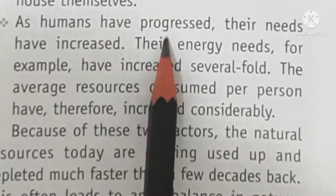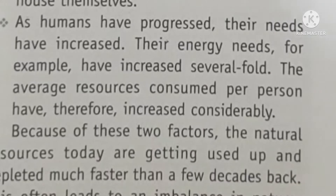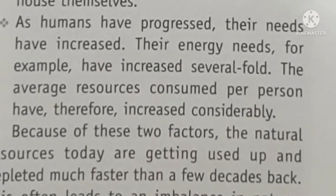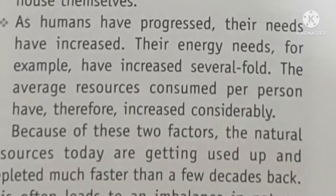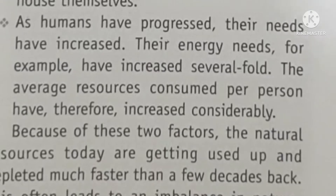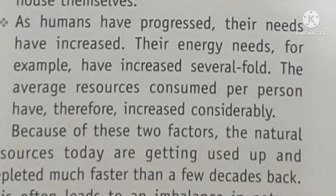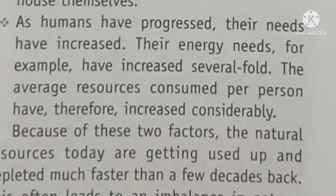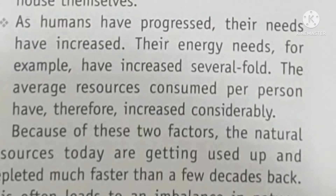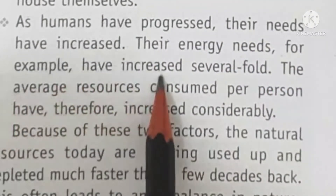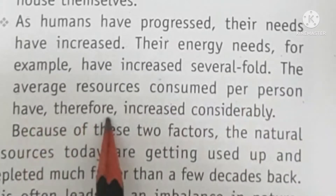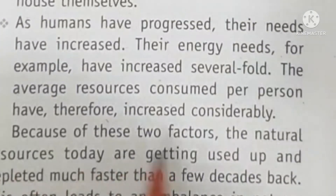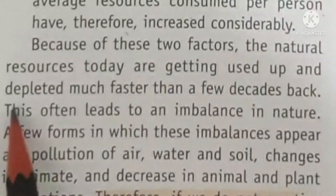Humans have made a lot of progress. In grandfather's time there were only cycles, then scooters and some cars, but today everyone has one or two cars minimum. Earlier there were no fridges, smart TVs, smartphones, washing machines, or ACs — only radios. Today all these things consume energy; they all run on electricity, and producing that electricity requires energy. Due to this progress, energy needs have increased greatly, and the average resource consumed per person is considerably increasing. Due to both these factors, natural resources are slowly getting depleted — they are being exhausted before they can be renewed.